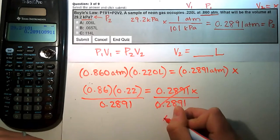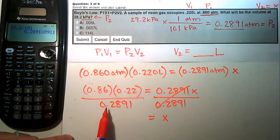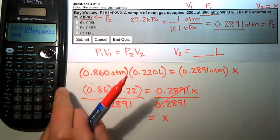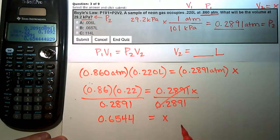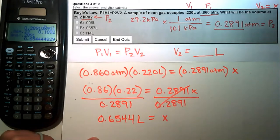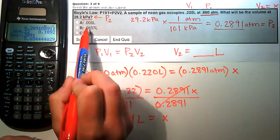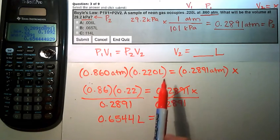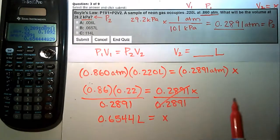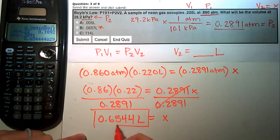Dividing both sides by 0.2891, we get X equals 0.86 times 0.22 divided by 0.2891. Doing that in the calculator gives 0.6544 liters. Looking at the answer choices, letter B appears to have a typo — it should read 0.657 rather than what's written. Our answer of 0.654 is very close to 0.657, so the answer is B and 0.65 liters is our result.